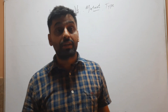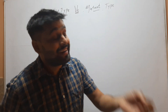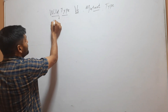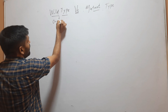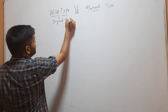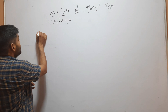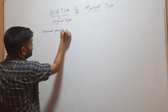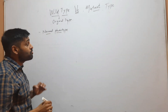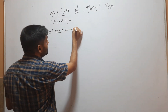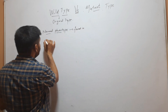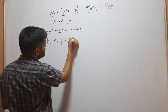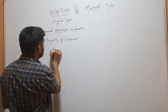Hello friends, welcome to my YouTube channel. In this video, we will discuss the difference between wild type and mutant type. Wild type means original type — a normal phenotype that is found in the majority of the natural population.